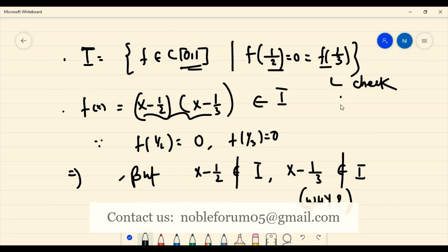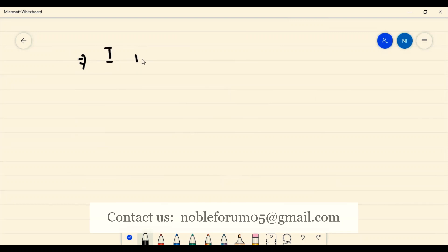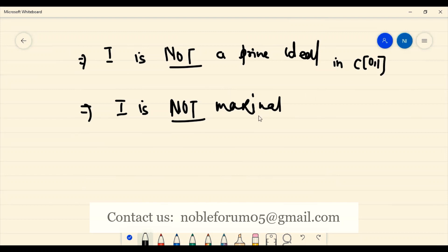First, check I is an ideal. Then you should think: it is not prime. Why is it not prime? Because you found two elements which belong to the ideal, but neither element is in there individually. Having all this, you can completely say that the given ideal I is not a prime ideal. Once it is not a prime ideal, this implies I is not maximal.